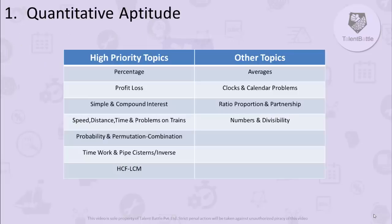The first part is quantitative aptitude. I have divided the topics into two parts: high priority topics and other topics. Based on analysis of previous year Wipro questions, the high priority topics are: percentage, profit and loss, simple and compound interest, speed-distance-time and problems on trains, probability and permutation-combination, time and work and pipe systems, problems based on inverse, HCF, and LCM.